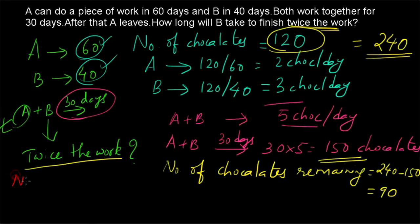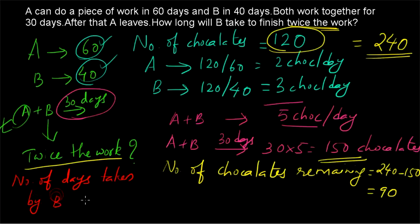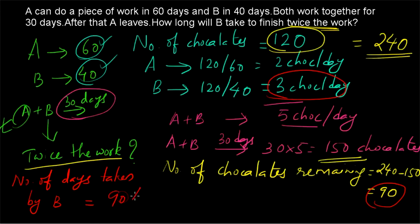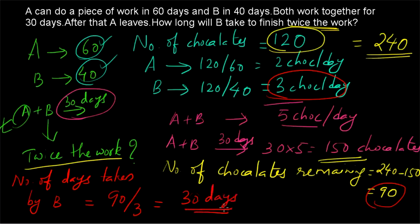The number of days taken by B to finish the 90 remaining chocolates: B has 3 chocolates per day, so the total number of days taken by B will be 90 divided by 3 equals 30 days. Thank you for watching.